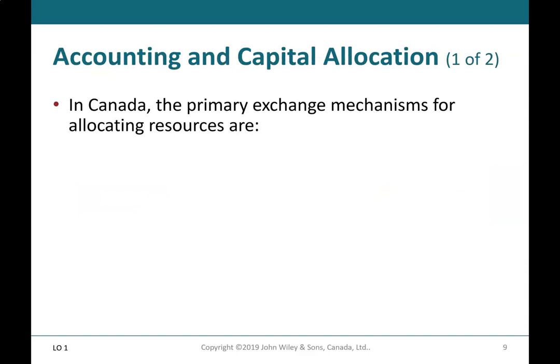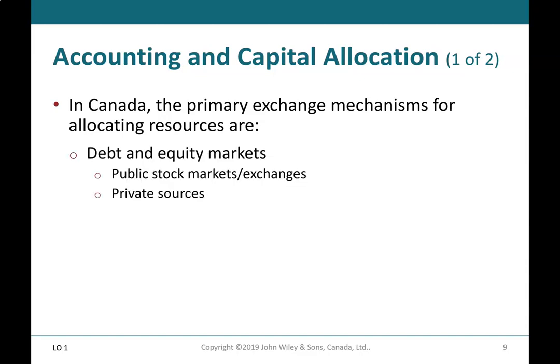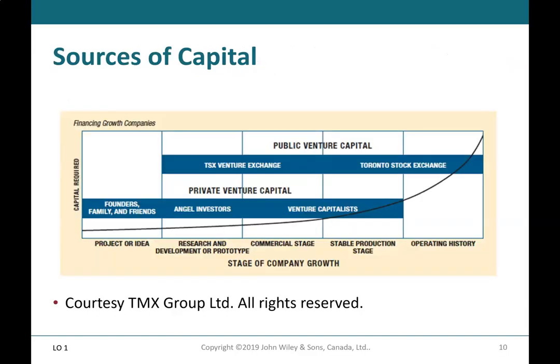Accounting and capital allocation: In Canada, the primary exchange mechanisms for allocating resources are debt and equity markets, public stock markets and exchanges, and private sources such as financial institutions, for example banks. Sources of capital depend on the stage of company growth.